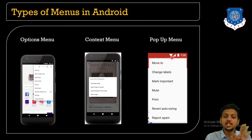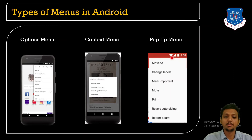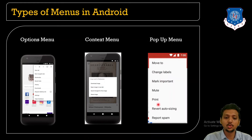In Gmail, for example, we have options like Move To, Change Labels, Mark Important, and Mute — these are all pop-up menus.